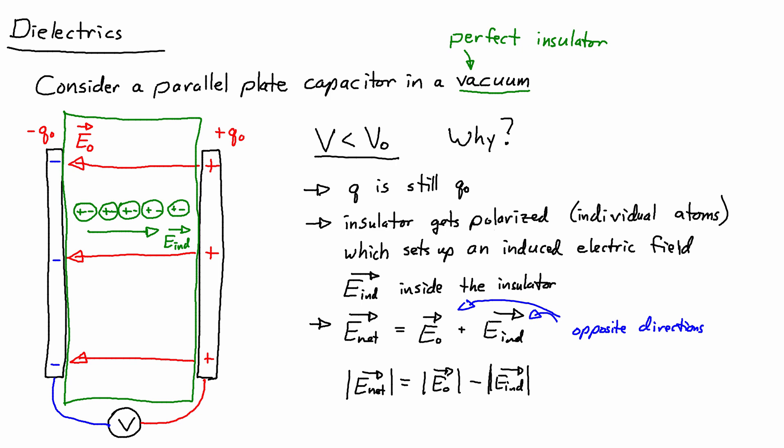And it turns out that the induced field is weaker than the original field. And if I just switch notation and just drop the vector arrow, then I can write that E net, therefore, has to be less than E0, because there is some induced electric field. So after inserting the insulator, which is called the dielectric, the net electric field is weaker than it was originally.